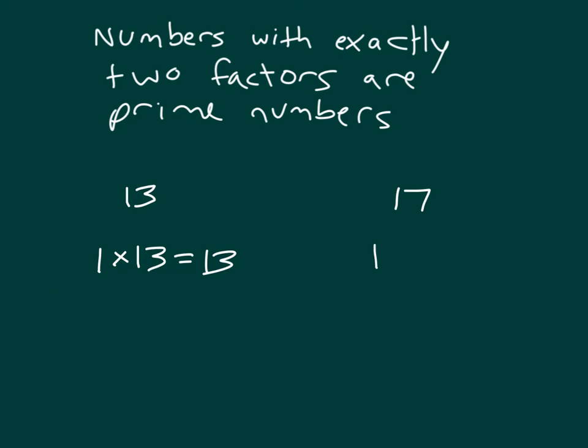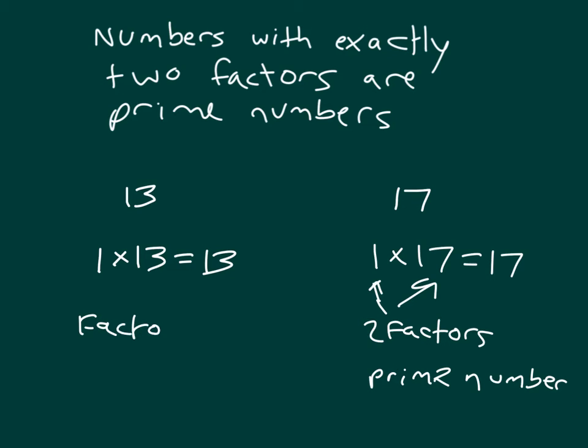We do the same type of thing with 17, where we get 1 times 17 equals 17. 1 and 17 are our only 2 factors. So we call this number a prime number. We call it a prime number when it has exactly 2 factors. The factors of 13 are 1 and 13.